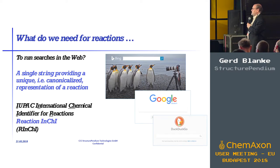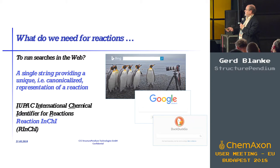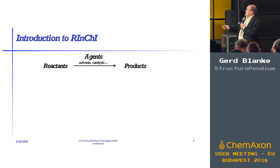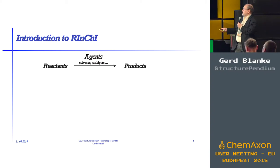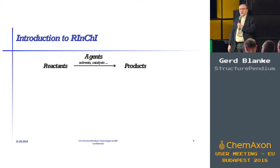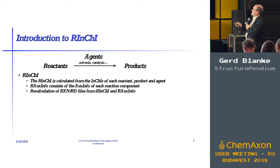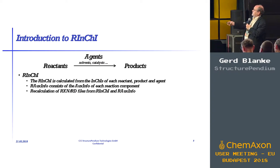The idea was to build the Reaction InChI, or RInChI. The basic schema for reactions is: you've got a bunch of reactants, you've got the products, and in between you've got your solvents, catalysts, and so on — we are summarizing those under agents. The Reaction InChI is then calculated stepwise for each of the reactants, products, and agents using the InChI.